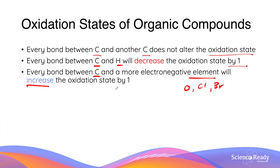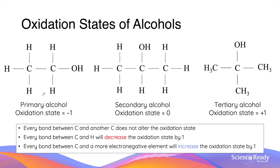Keep these three rules in mind as we go through the oxidation states of various alcohol structures. In a primary alcohol, the carbon atom bonded to the alcohol has an oxidation state of minus one — it is bonded to two hydrogens, which each decrease the state by one, and it is bonded to an oxygen, which increases the state by one, giving a net state of minus one. In a secondary alcohol, the carbon atom is bonded to one hydrogen (decreasing by one) and one oxygen (increasing by one), giving a net oxidation state of zero.